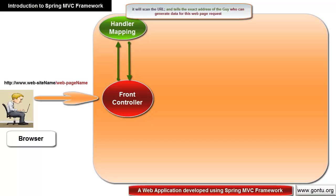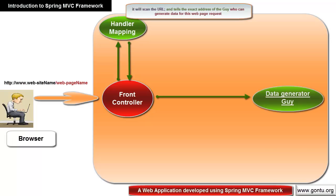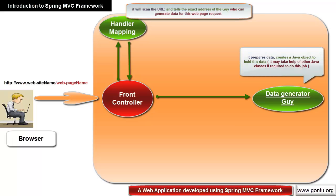Based on the information provided by handler mapping, the front controller passes the request to the specific component that will generate data for that web page. This component prepares the data and typically creates a Java object to hold it. It may contain some business logic to generate the data, get data straight from the database, or call other Java classes to do this job.